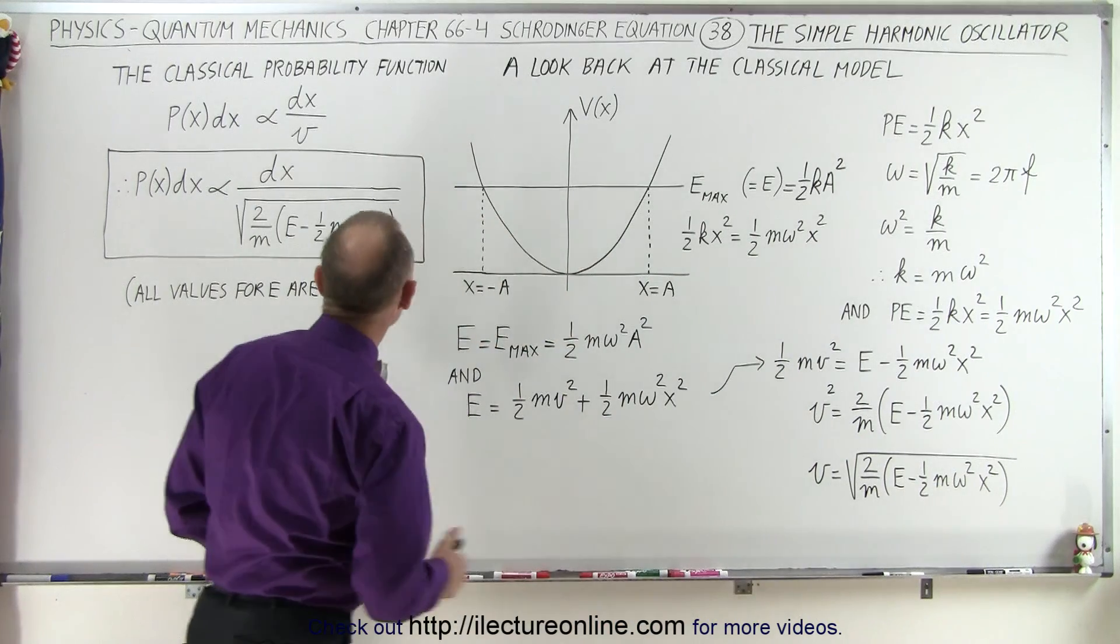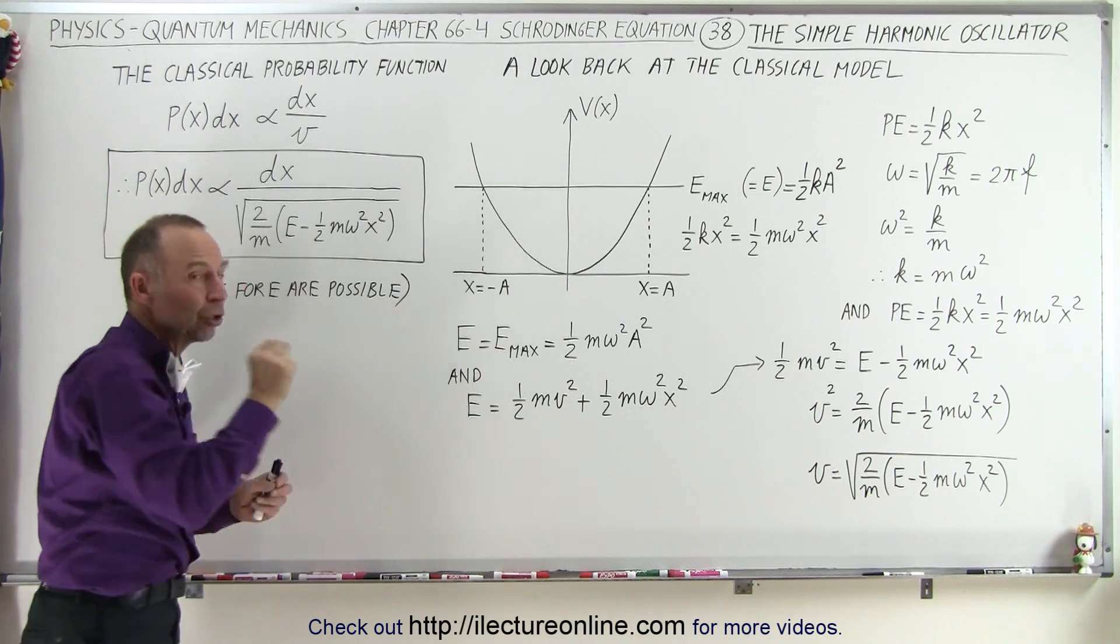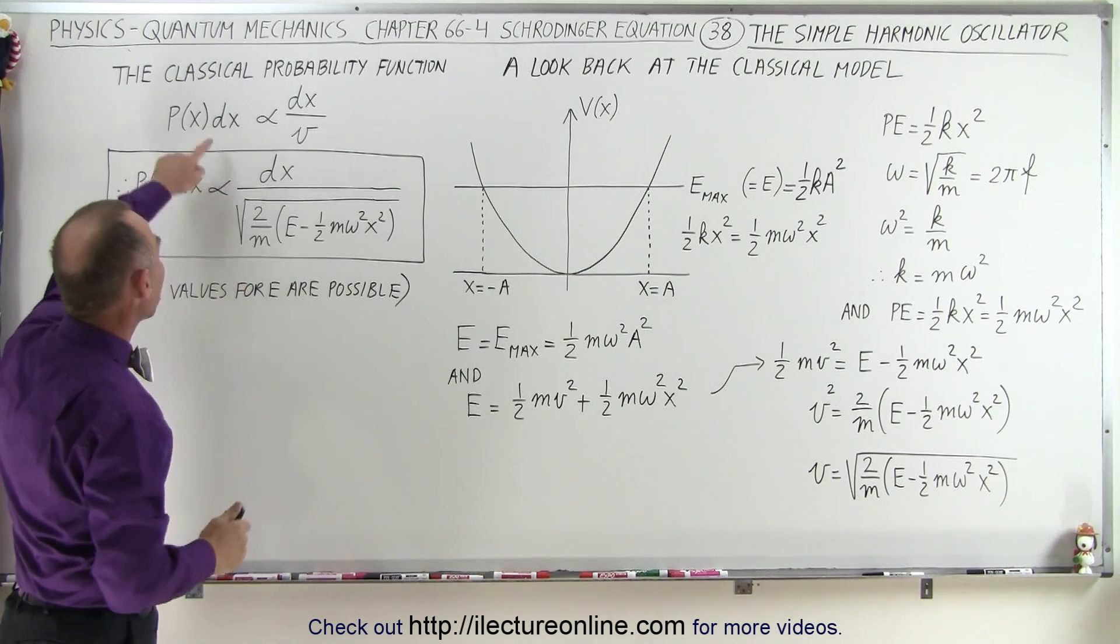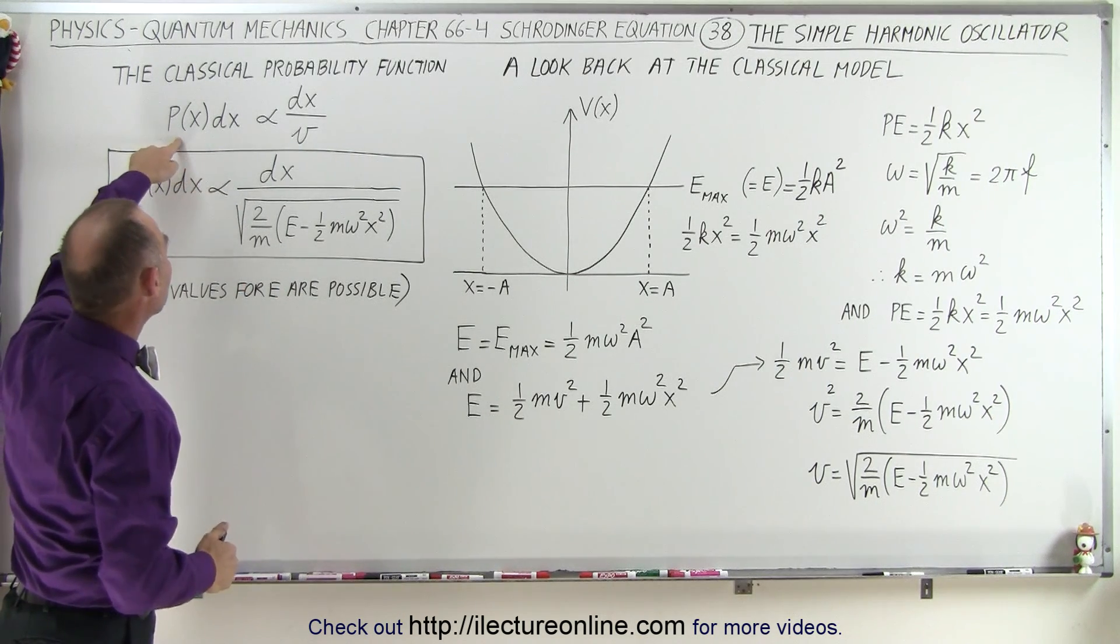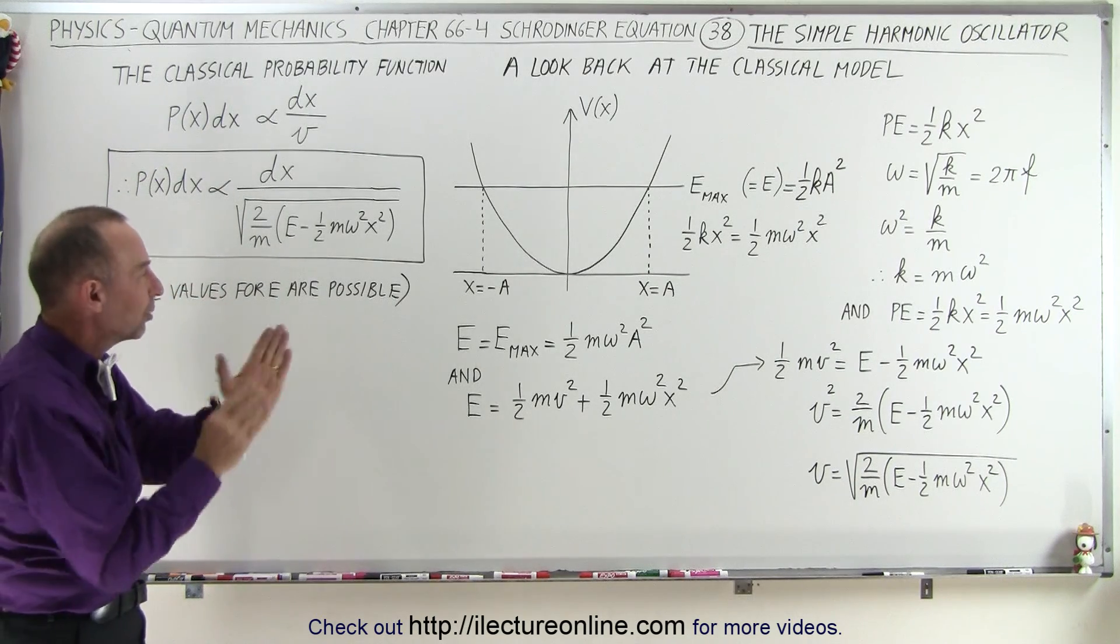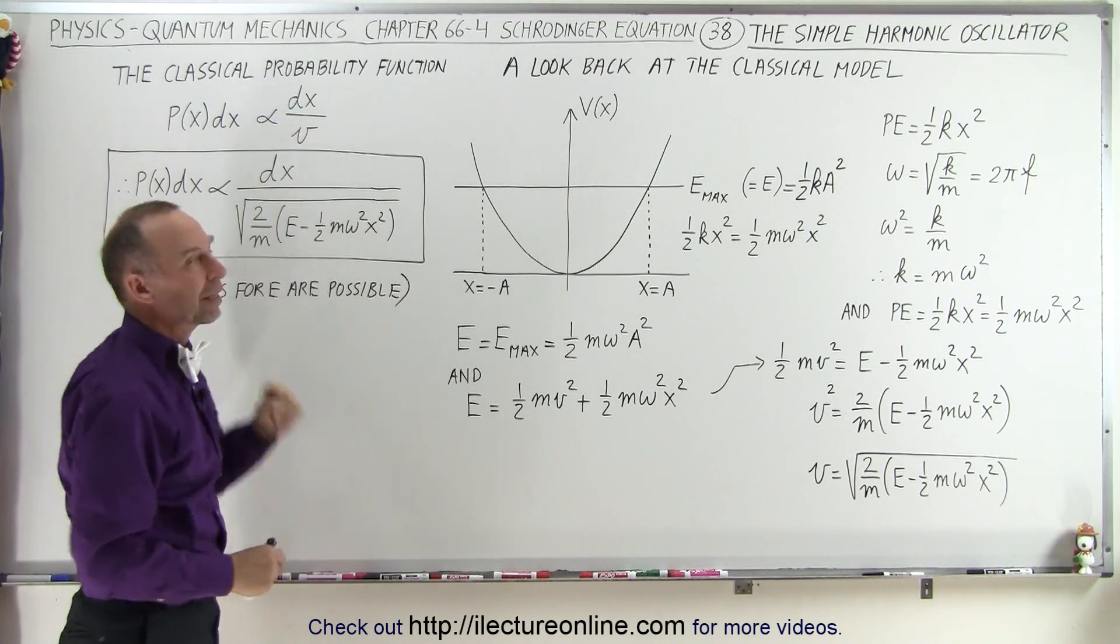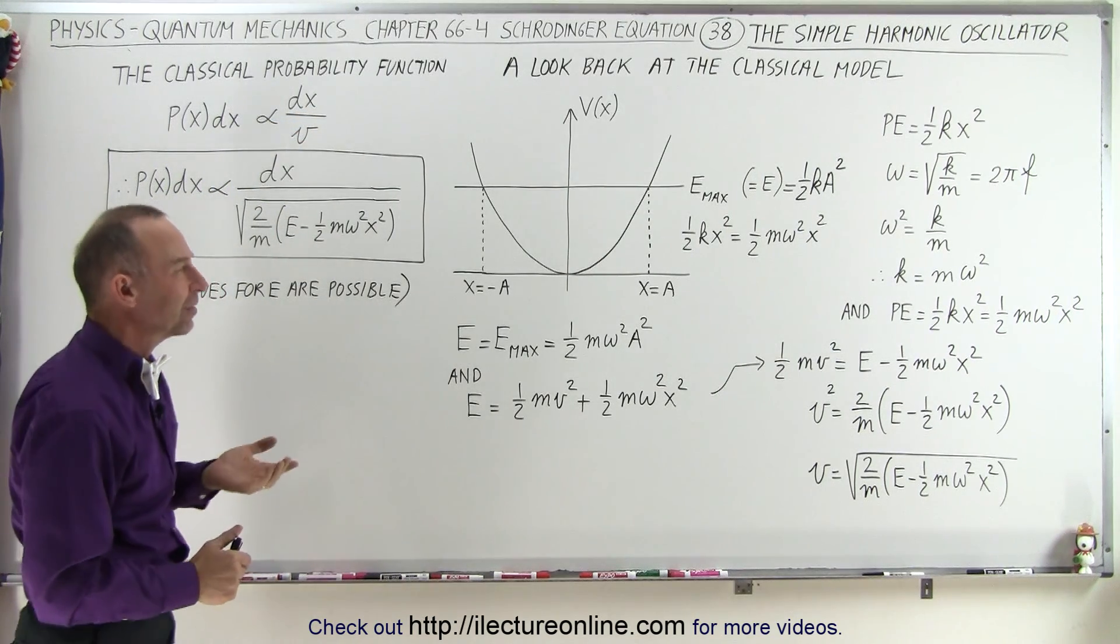Now, we come over here and we want to talk about the probability of finding the particle, the oscillator, at some value for x. And we know that the probability times dx, and dx, of course, is a small segment of where it might be, is proportional to that dx divided by the velocity. Let's see if that makes sense.